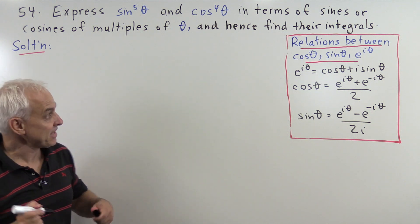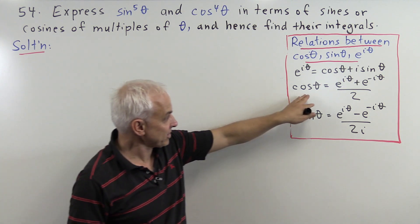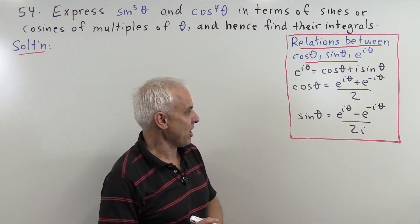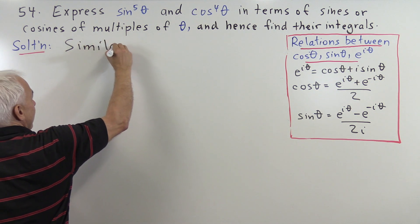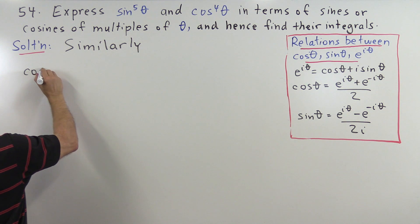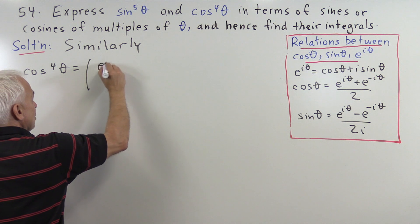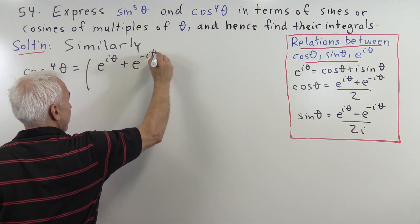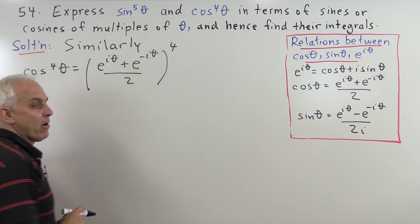Now let's try the same thing with cosine to the fourth theta, which is a little bit easier because the cosine expression doesn't have the bothersome i in the denominator. So similarly, cosine to the fourth theta will be e to the i theta plus e to the minus i theta all over 2, which is the expression for cosine theta, all to the fourth power.